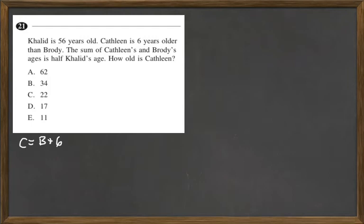is half of Khalid's age. So we know that C plus B equals one-half of 56, which is equal to 28.